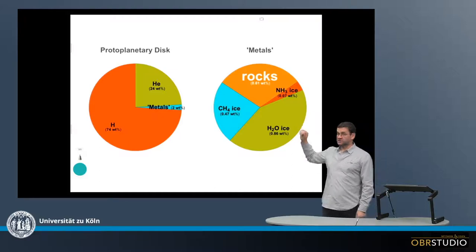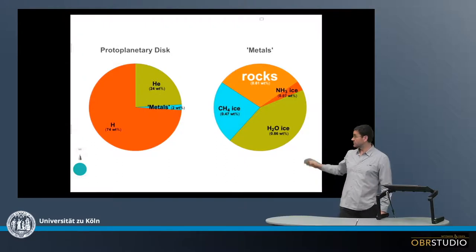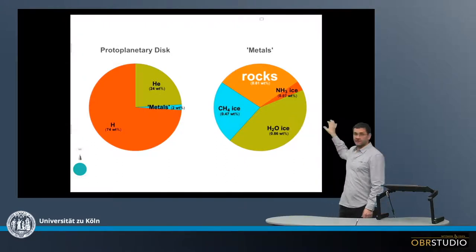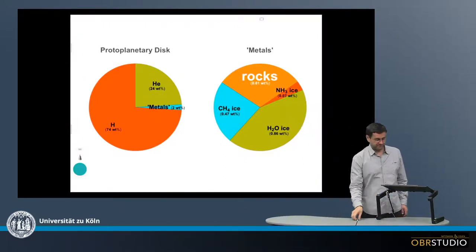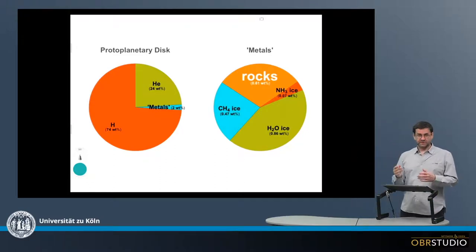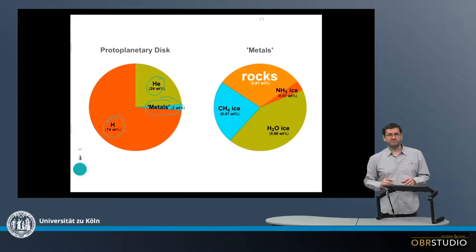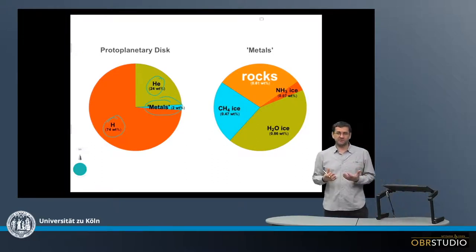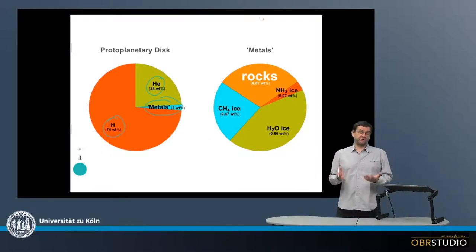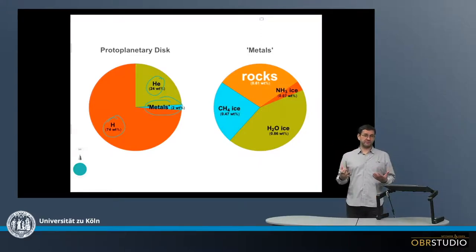These two pie charts illustrate the initial composition of our solar system. One is called Proto-Planetary Disc and the second is called Metals. The Proto-Planetary Disc pie chart contains three categories: two elements — hydrogen and helium — and then something called metals. This is how astronomers view the table of elements: hydrogen, helium, and everything else is metals.